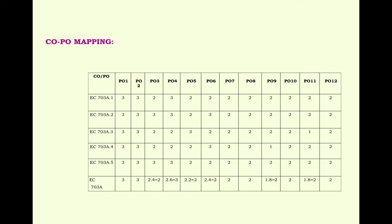For the CO-PO Mapping, the upper row includes PO1 to PO12 and the first column on the left-hand side is CO. This 5 COs are mapped with 12 POs. The index indicates correlation: 1 indicates less correlation, 2 indicates moderate, and 3 indicates best correlation. If there is no mapping it will be zero. This is the mapping of CO and PO.